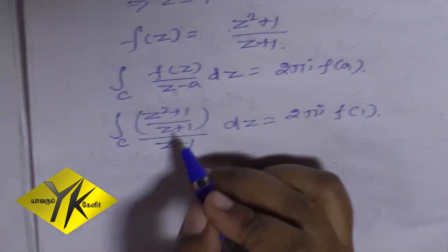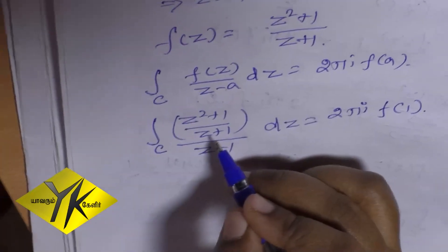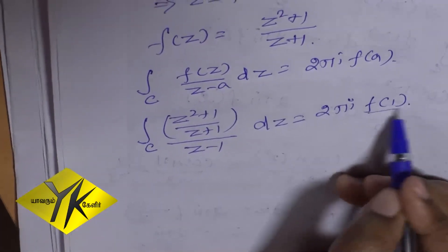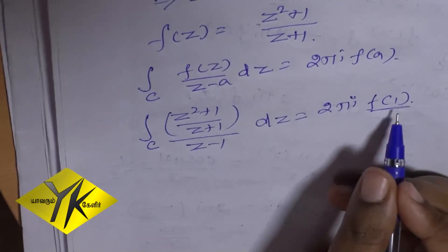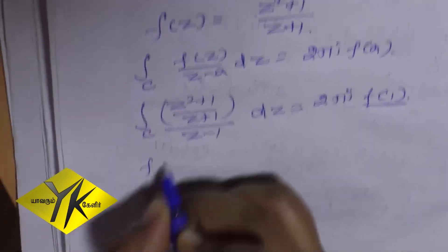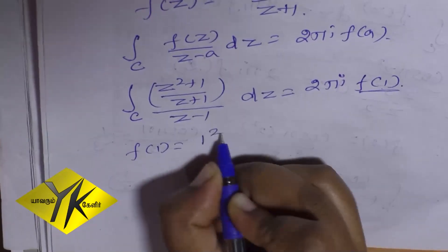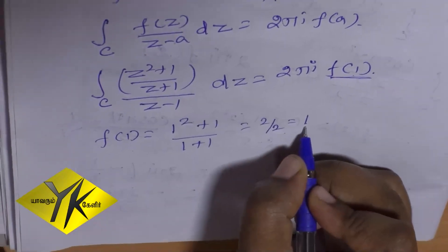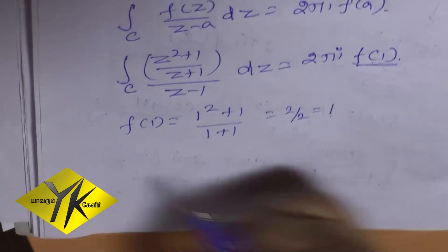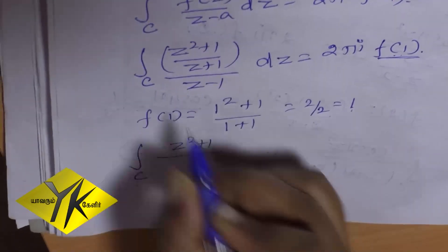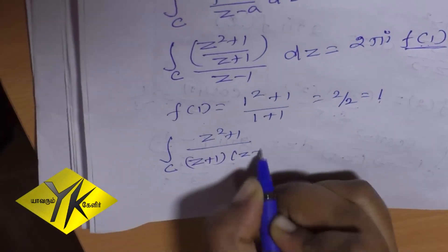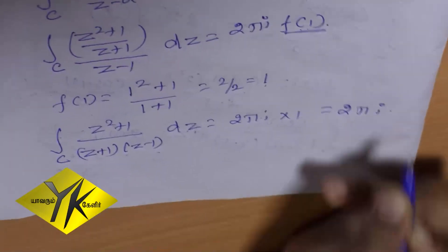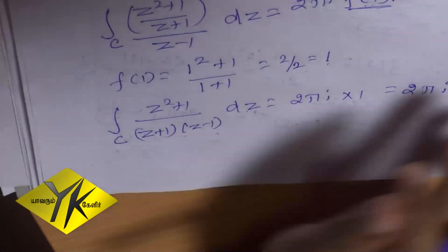We identify f(z) = (z² + 1)/(z + 1) with a = 1. Since f(z) is analytic and differentiable at every point inside C, we can apply Cauchy's Integral Formula. f(1) = (1 + 1)/(1 + 1) = 2/2 = 1. Therefore, the integral over C of (z² + 1)/[(z + 1)(z − 1)] dz equals 2πi × 1 = 2πi.